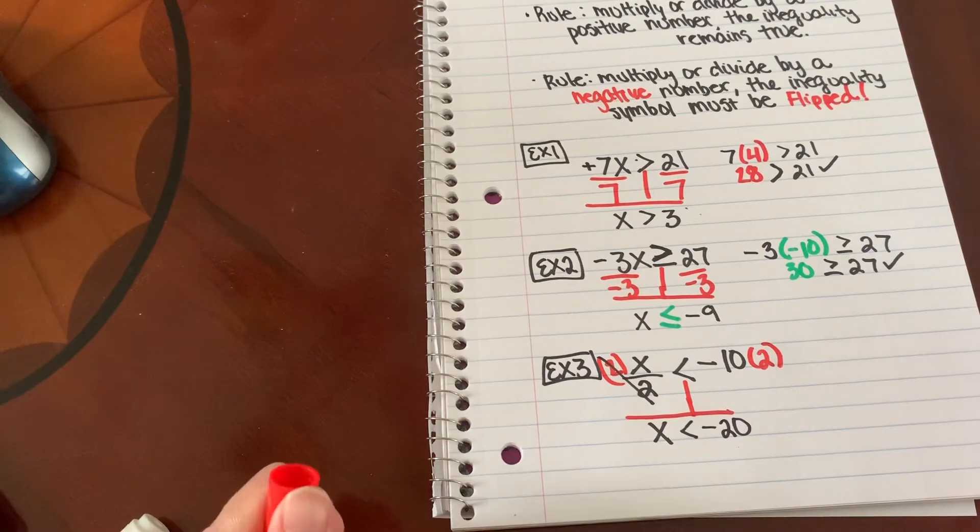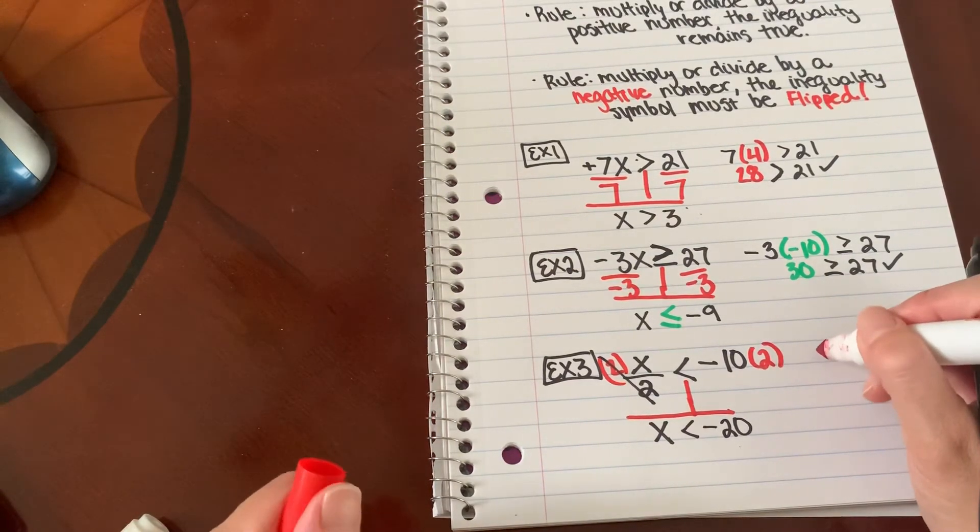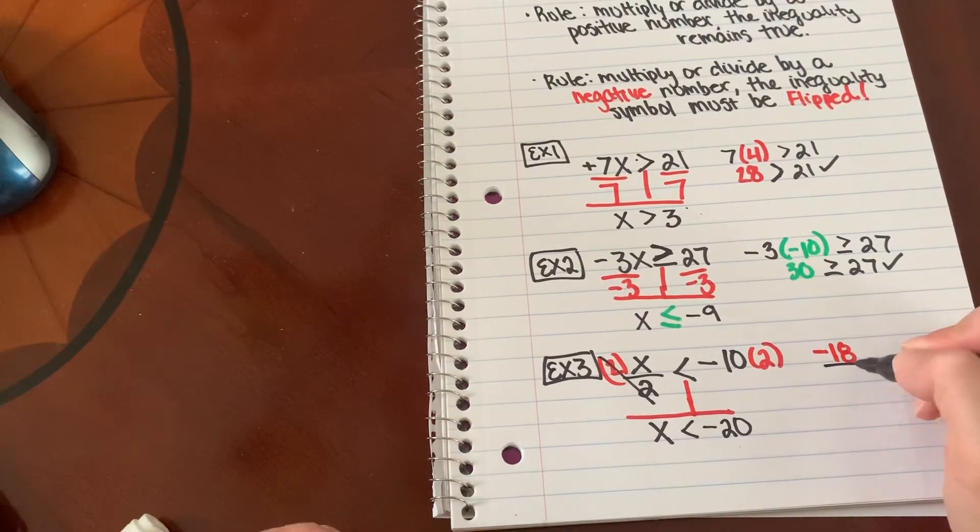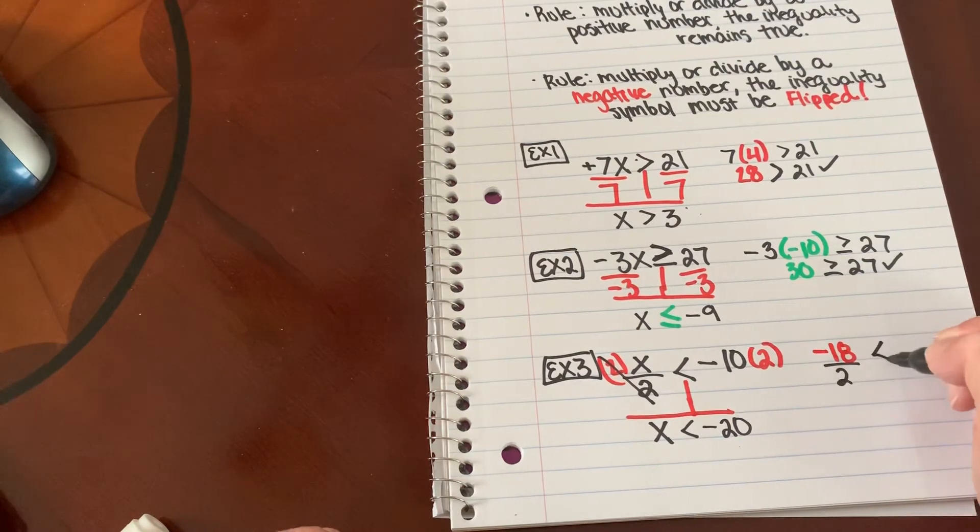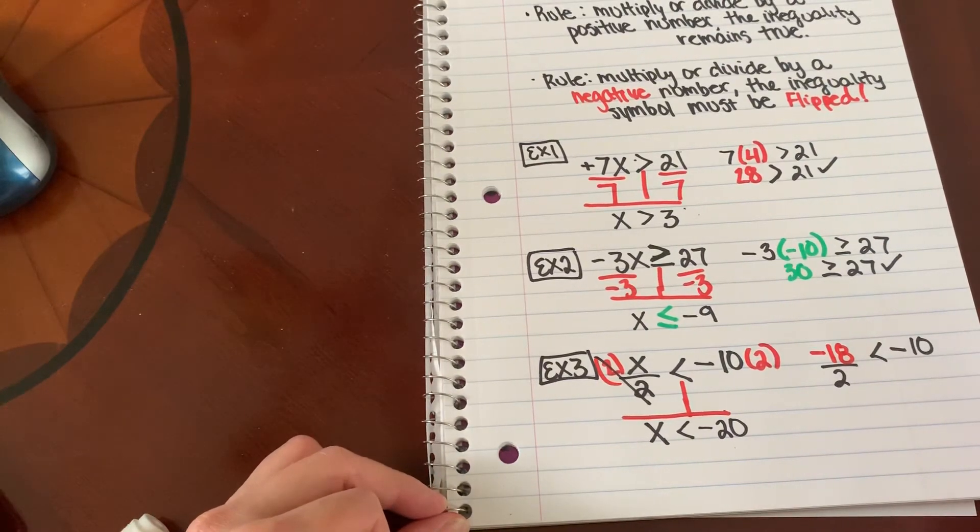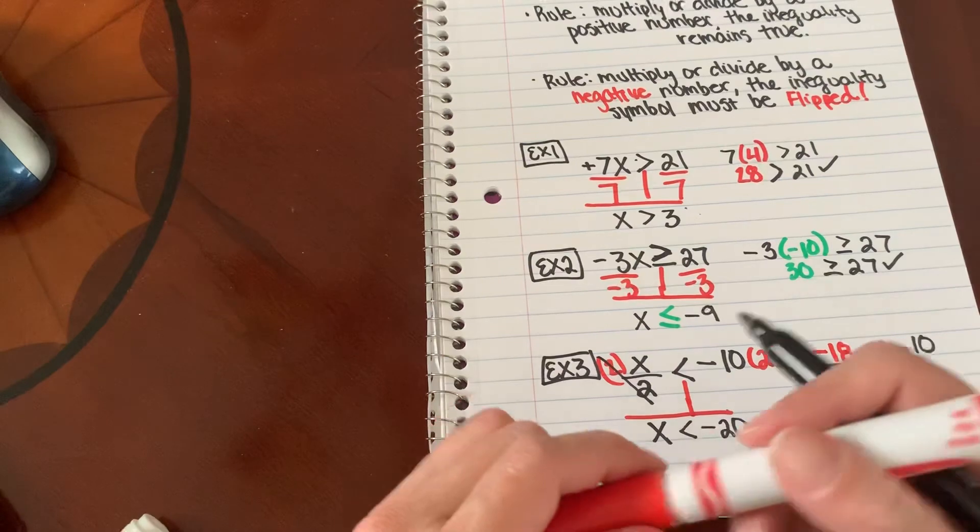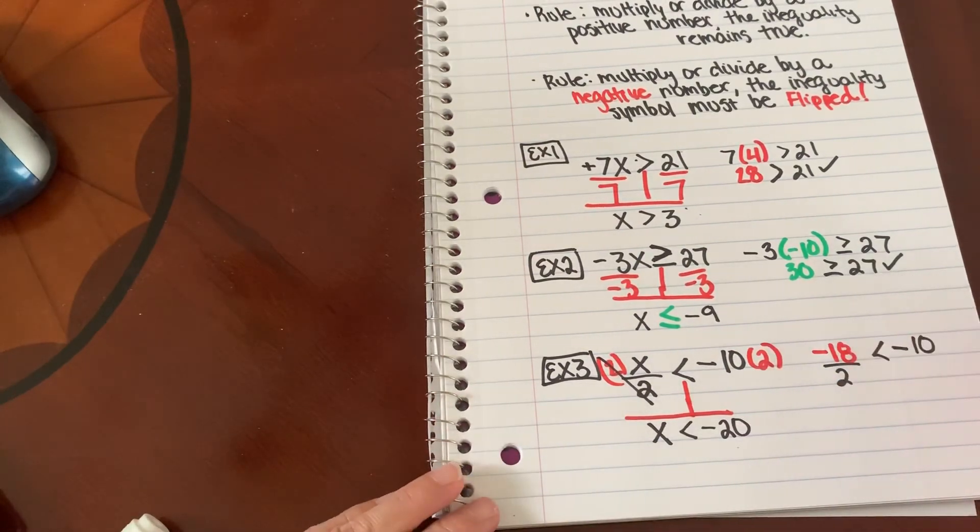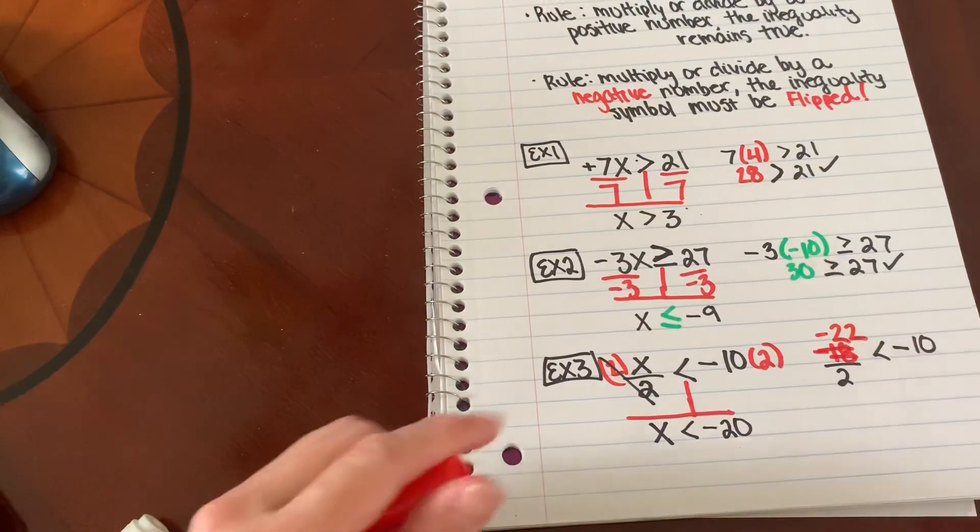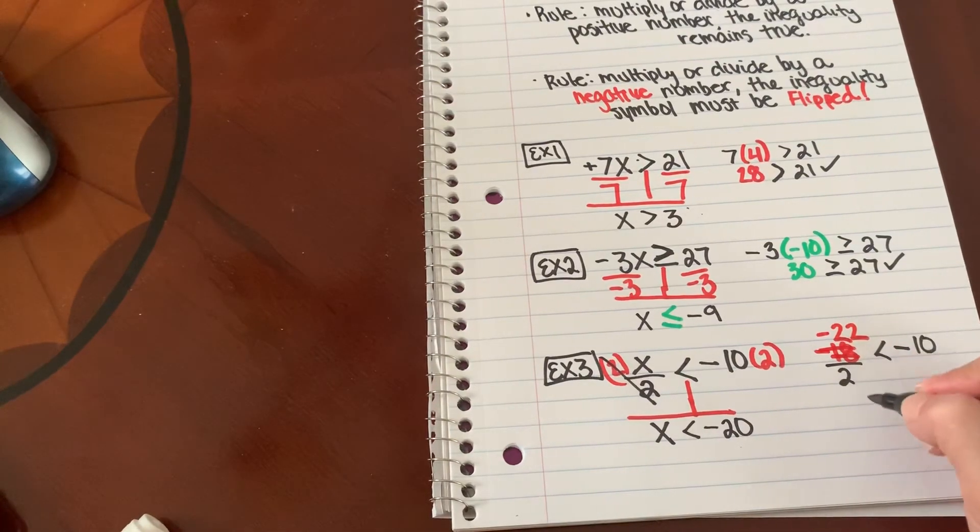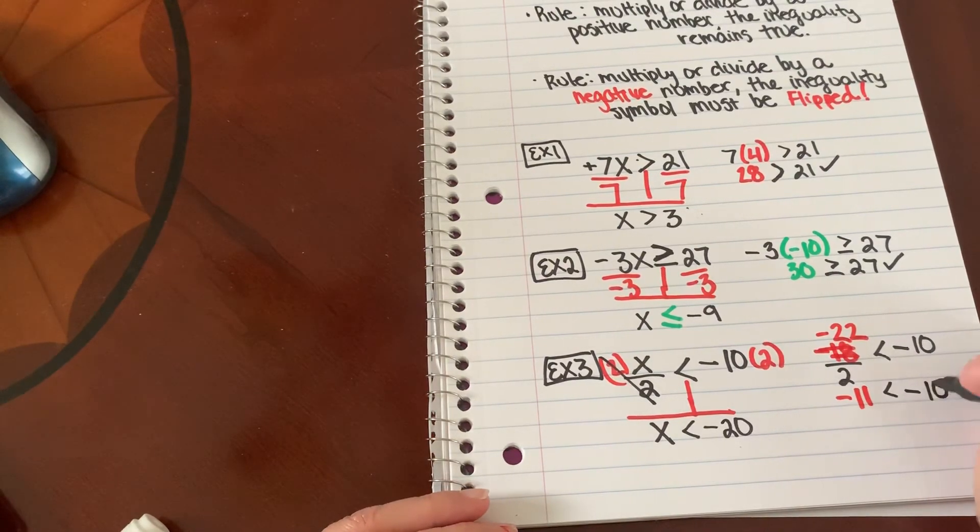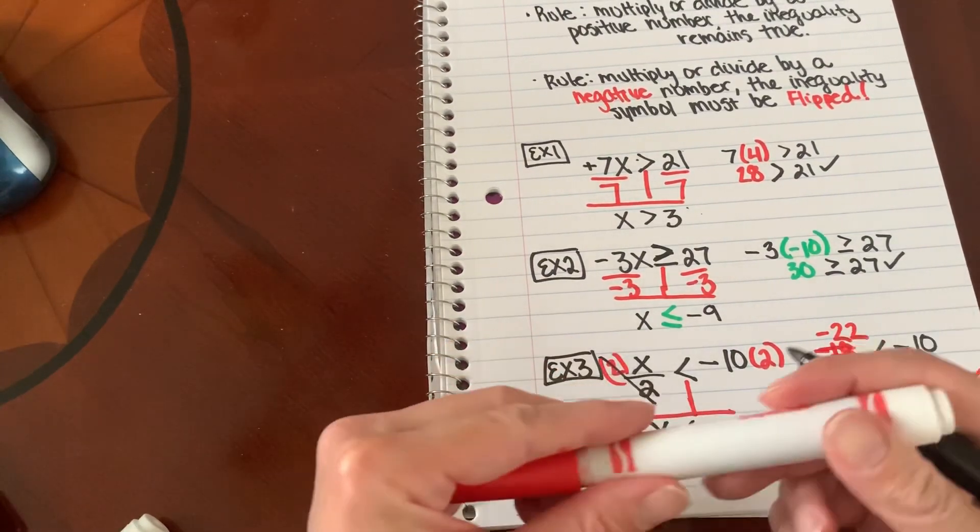So what number is less than negative 20? I'm going to pick negative 18 since I can't divide—if I picked 19, I can't divide that by 2. So I'm going to pick negative 18 divided by 2. Is that less than negative 10? Oh, I am wrong here. Negative 18 is not less than negative 20. I'm going to pick negative 22. So negative 22 divided by 2, that's going to be negative 11. And yes, that is less than negative 10. Caught my mistake there.